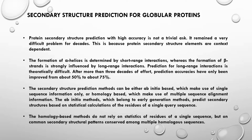High-accuracy protein secondary structure prediction is not a trivial task and remained a difficult problem for decades. This is because secondary structural elements are context dependent: alpha helix formation is determined by short-range interactions whereas beta strand formation is strongly influenced by long-range interactions, which are theoretically difficult to predict. After more than three decades of effort, prediction accuracies of these softwares improved only from about 50 percent to 75 percent. Prediction methods are either ab initio based, using single sequence information only, or homology based, using multiple sequence alignment information.